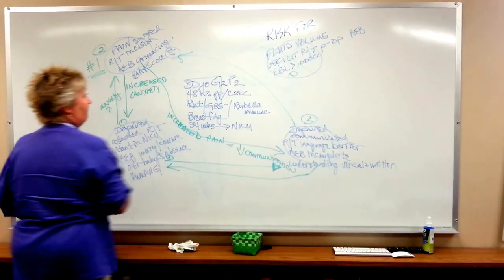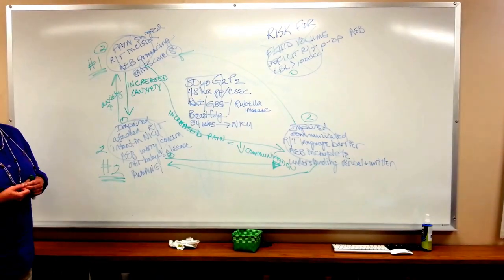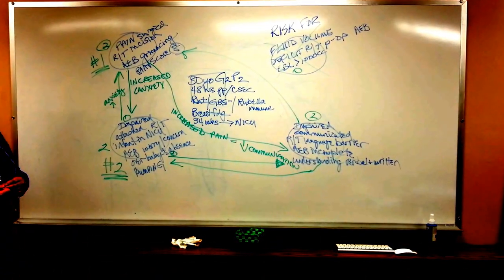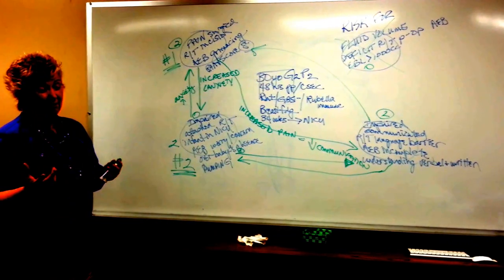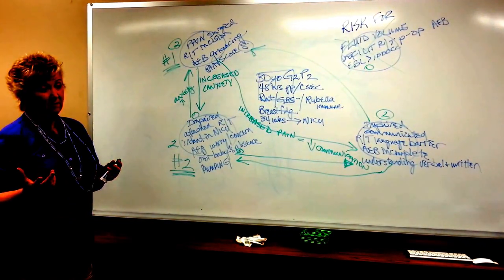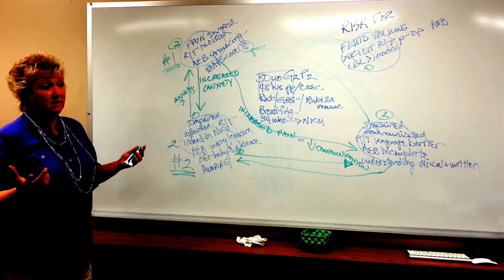Does that mean, Professor Bell, that I couldn't put at risk for on this map? You can, but if it doesn't have any arrows that come from it, and risk fors often don't have arrows that come from it, it's not important in the decision making.